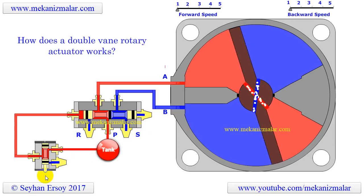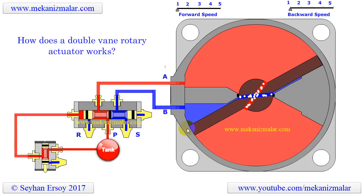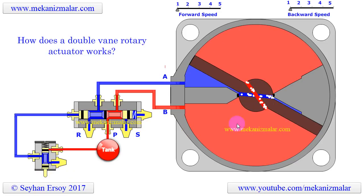These four chambers are divided into two chambers on both sides of the vane. While one of these two is filled with high-pressure oil, the other is connected to the tank of the hydraulic system.